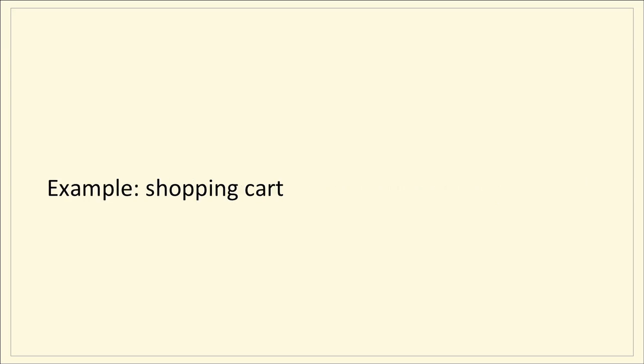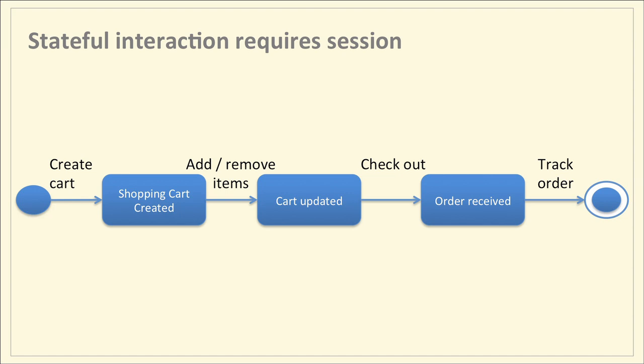Consider a shopping cart scenario. There will be multiple interactions — a multi-step workflow between the client and server with a series of state transitions. The client creates a cart, goes through state transitions to update it, and finally checks out. After checkout, the cart ceases to exist or gets archived. Each time the cart state changes, the server needs to know the present state.